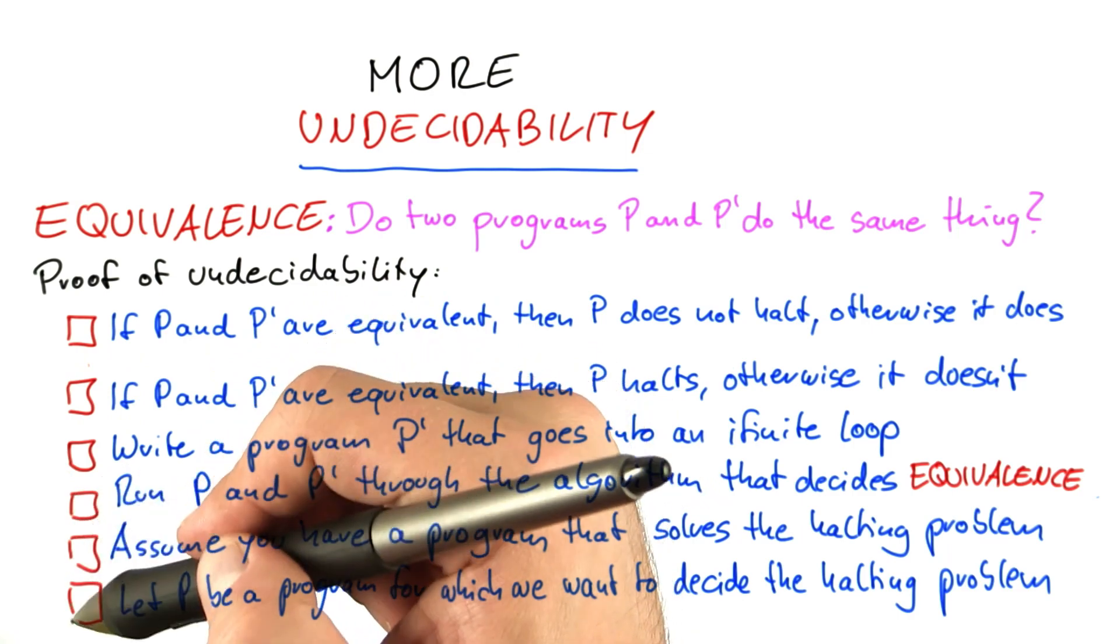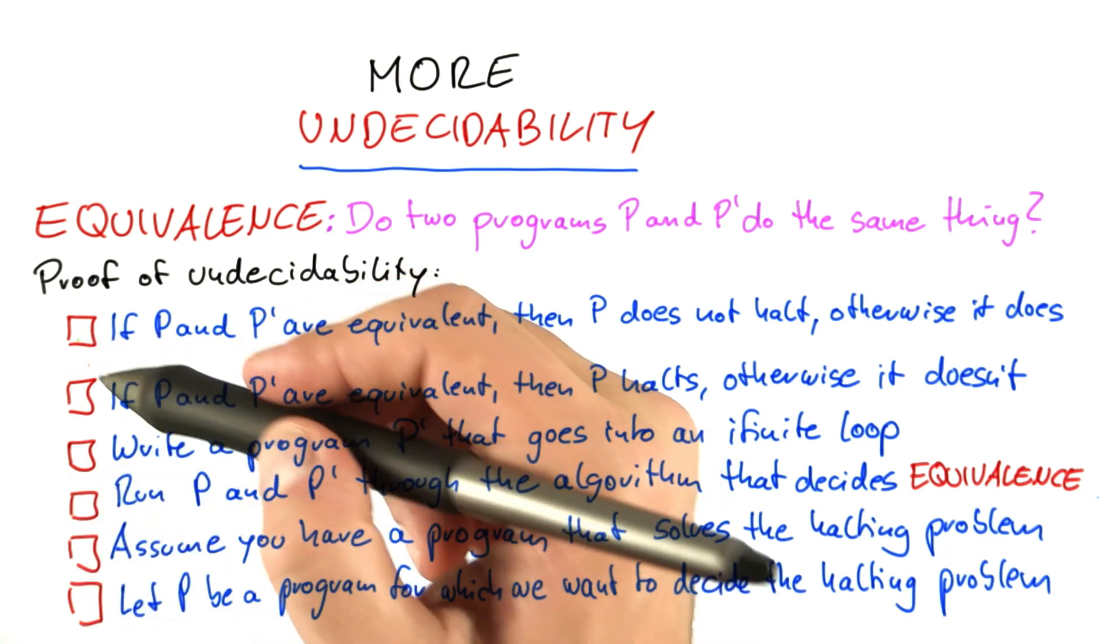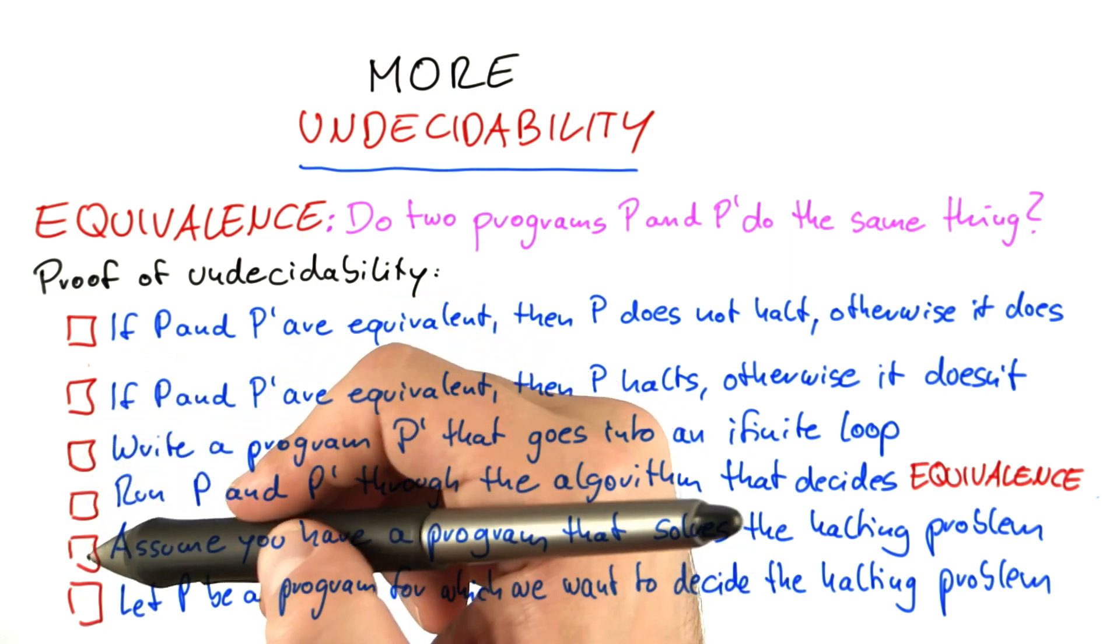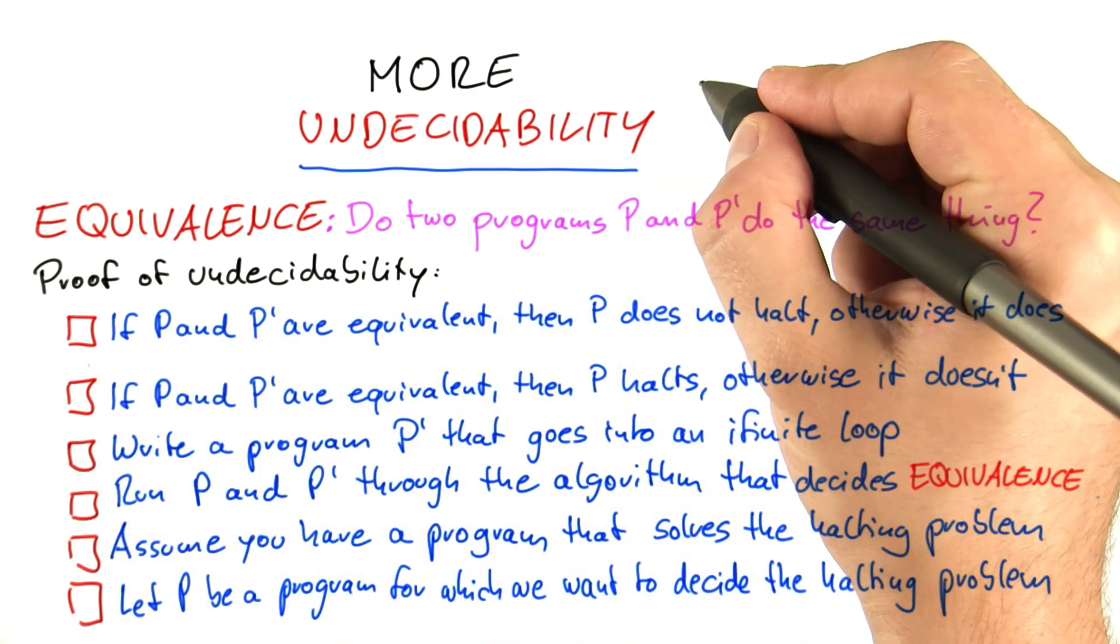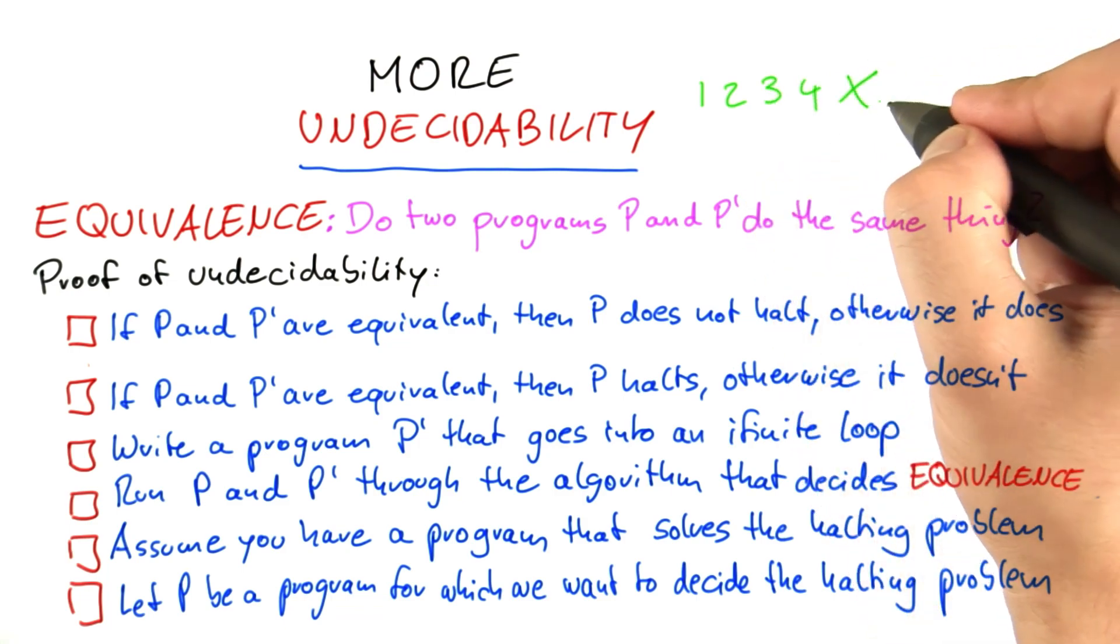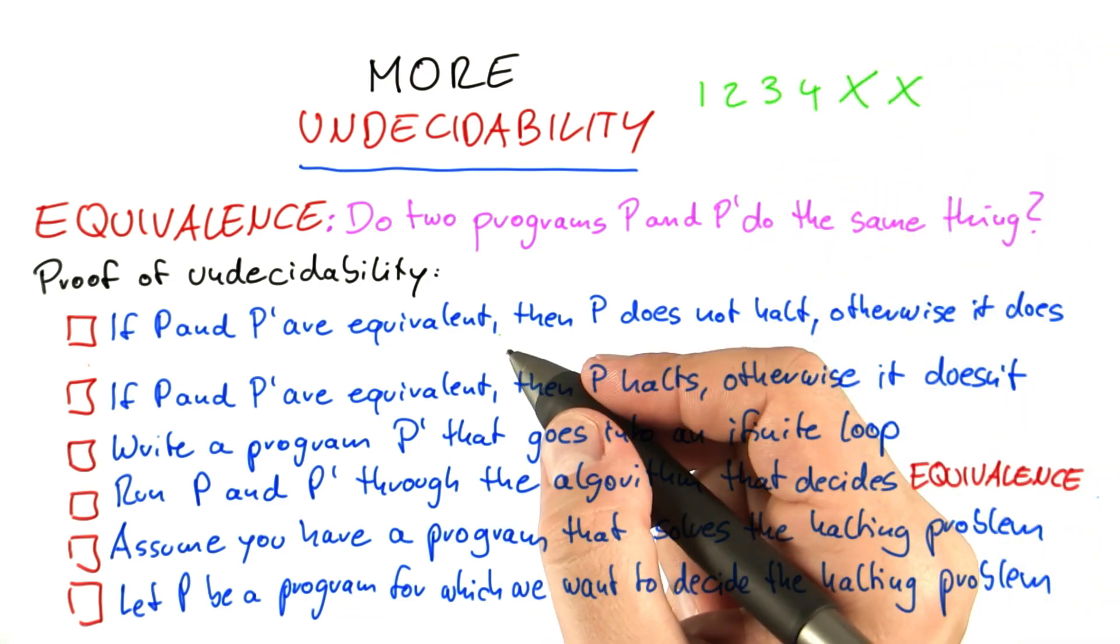Now, the way we're going to do this quiz is as follows. I have here six building blocks or potential building blocks of this proof. And I would like you to do the following. There are four building blocks that you actually need for the proof, and there are two building blocks which are not necessary for the proof.